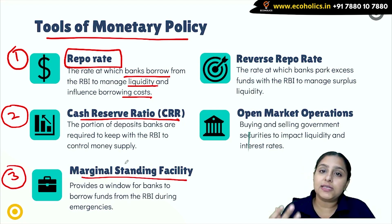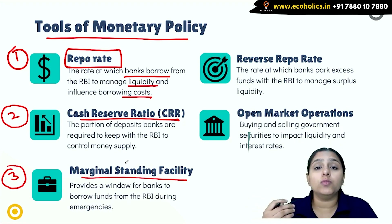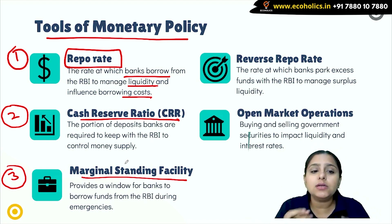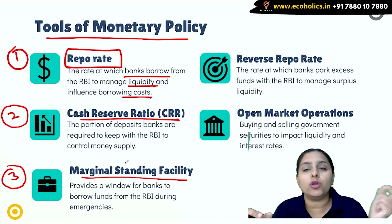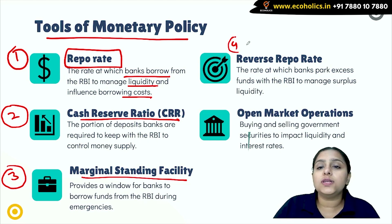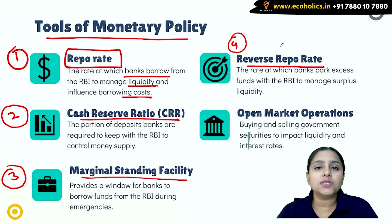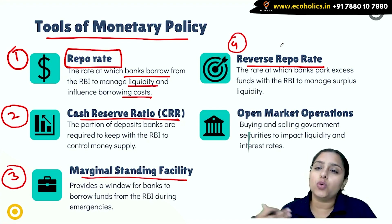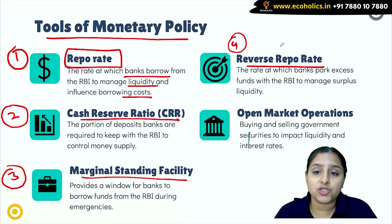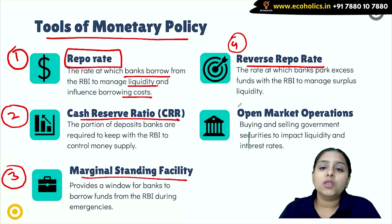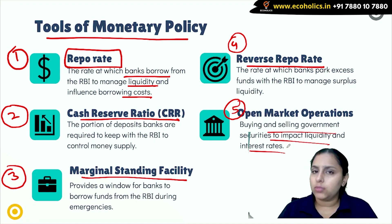The third tool is Marginal Standing Facility. This provides a window for commercial banks to borrow funds from RBI during emergencies. If a commercial bank needs money urgently for a very short period, they can use the Marginal Standing Facility to borrow from RBI temporarily. The fourth tool is Reverse Repo Rate — if excess money is with commercial banks, just like a person deposits money in a bank, commercial banks deposit their surplus money with RBI and RBI pays them interest. The fifth tool is Open Market Operations, where RBI can sell or buy government bonds to either expand or contract the money supply.